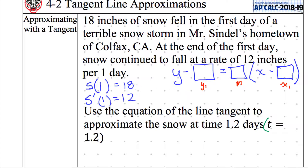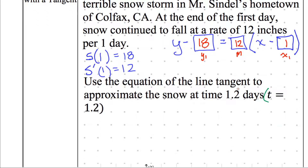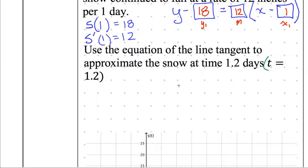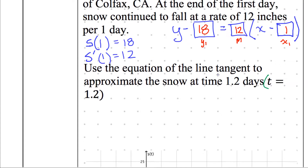Fill in what we know: Y minus 18 equals 12 times the quantity X minus 1. So we have that equation. Use the equation of the line tangent to approximate the snow at time 1.2 days. I have my equation — it's Y minus 18 equals 12 times the quantity of X minus 1. I need to use that to somehow approximate 1.2.